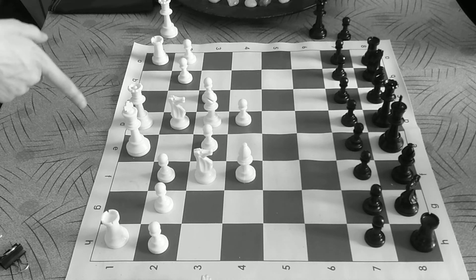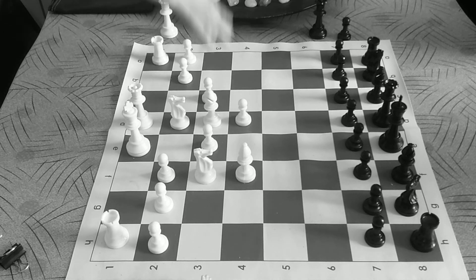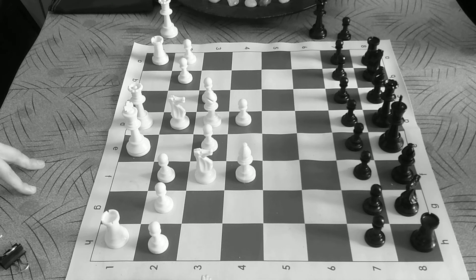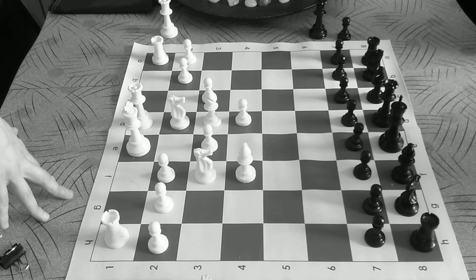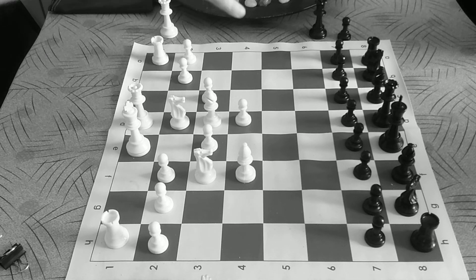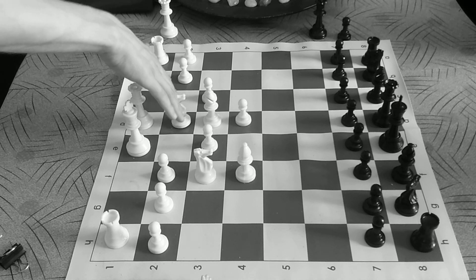This is useful because it can be played against most things that black does. Whereas most openings require you to learn a bunch of lines, which means responses to black's play, this one is pretty much the same no matter what black does.